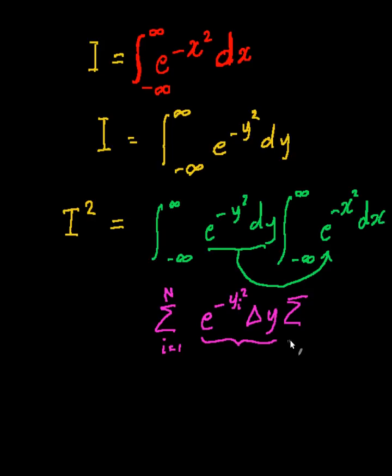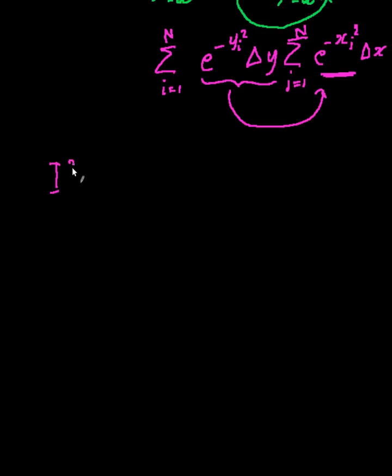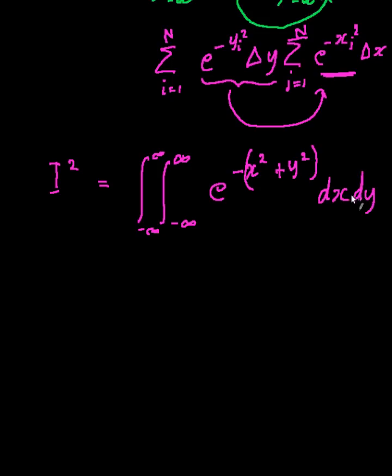And I have a second summation that goes j equals 1, 2, n, e to the minus x j squared delta x. So because this summation does not depend on anything of this y i squared, I can take it inside. Okay. So because of that, I squared will now end up becoming equal to the double integral of negative infinity to infinity, negative infinity to infinity of e to the minus x squared, and I'll write this inside brackets, plus y squared, dx dy.